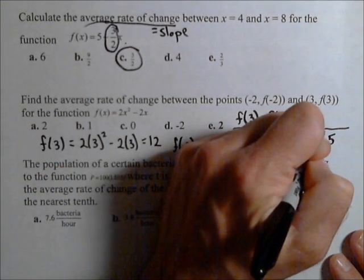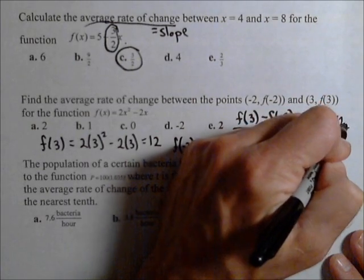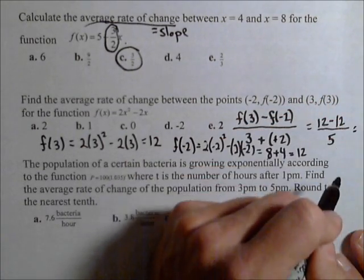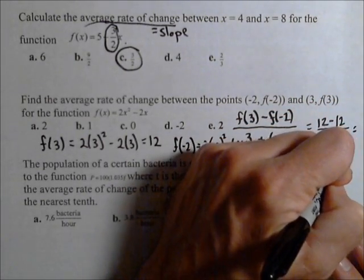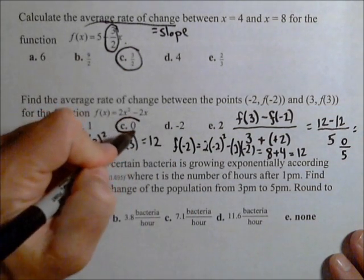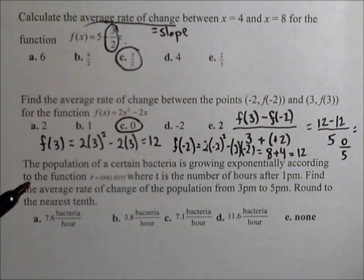So our change in output is 12 - 12. So we get 0/5, or 0 for our average rate of change.